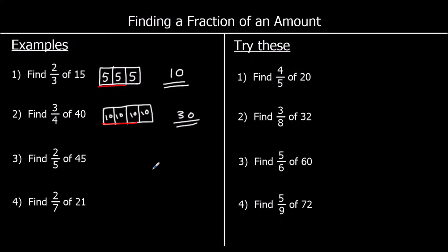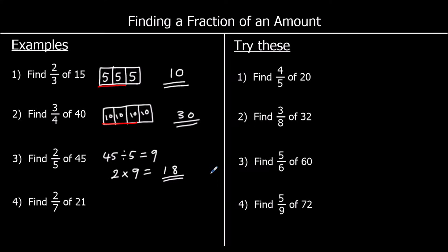For question three, we want two fifths of 45. So we're going to split 45 into five parts. 45 divided by five is nine, so each part is worth nine. We want two of the parts, so two nines are 18. For question four, two sevenths of 21. So we're splitting 21 into seven parts, each part is worth three. We want two of the parts, so two threes are six.